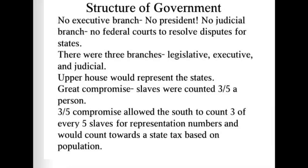Under the Articles of Confederation, the structure of government had no executive branch, no president, and no judicial branch — meaning there were no federal courts to resolve disputes between states.